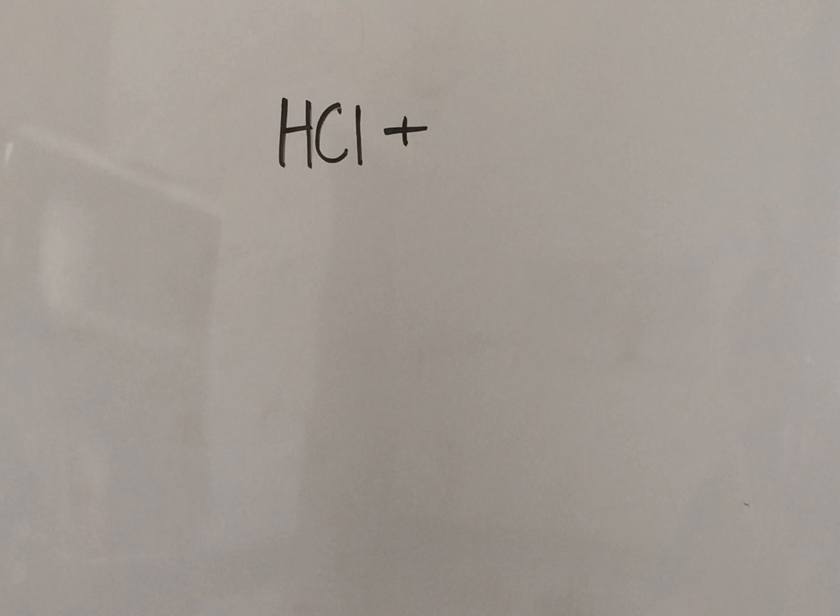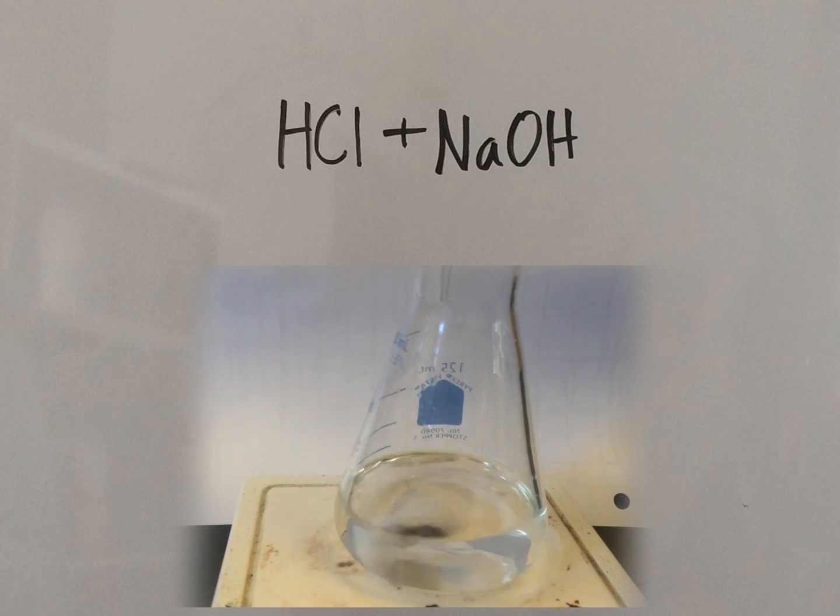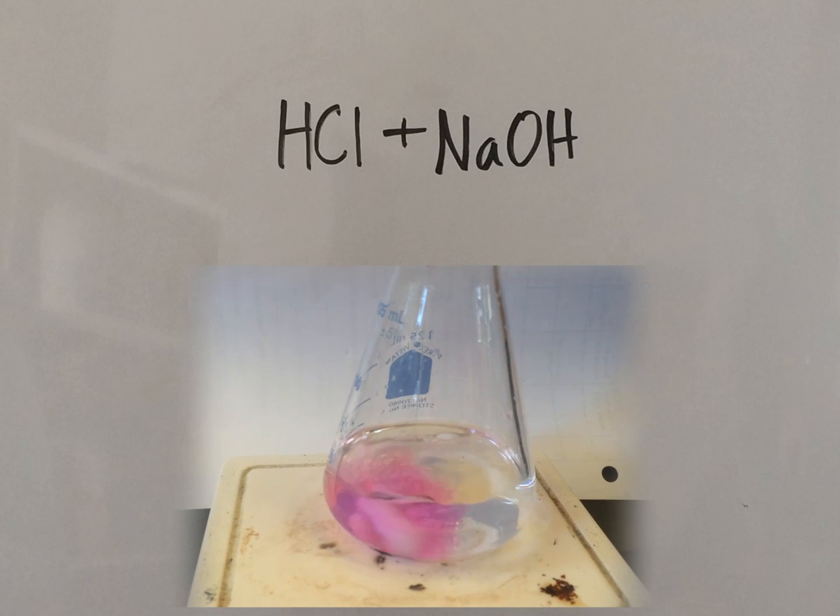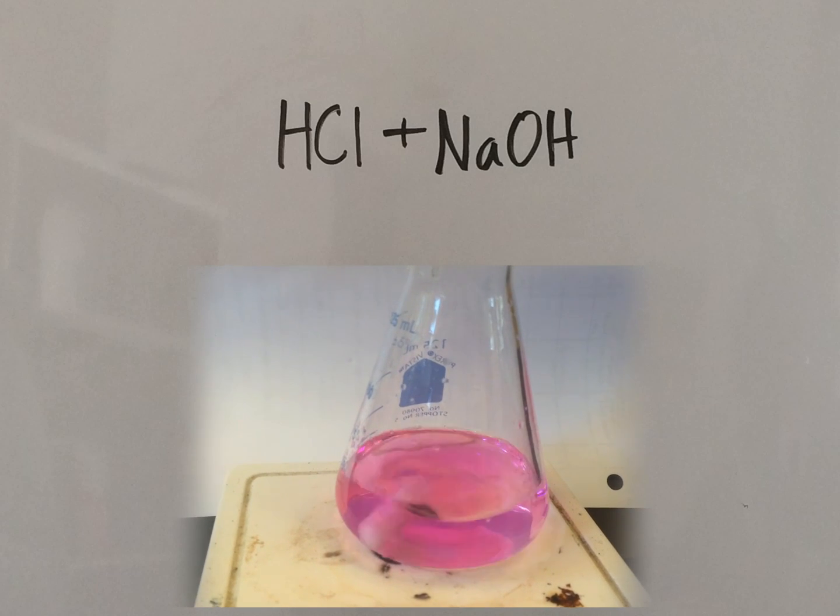So for example, let's combine hydrochloric acid, an acid obviously, and sodium hydroxide, a base. We are adding the sodium hydroxide slowly into the acid, and we've used indicator to determine when they neutralize.